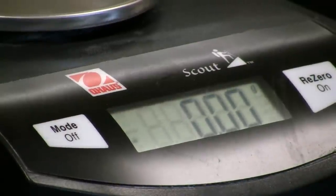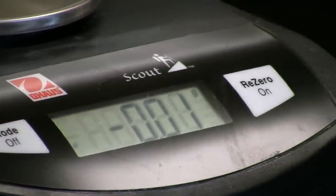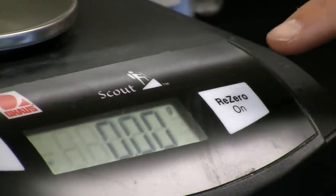The other important button on an electronic balance is the re-zero, or tare button. Pushing this button resets the balance to zero.